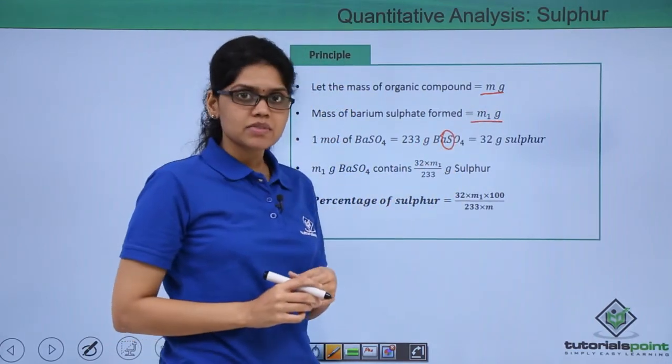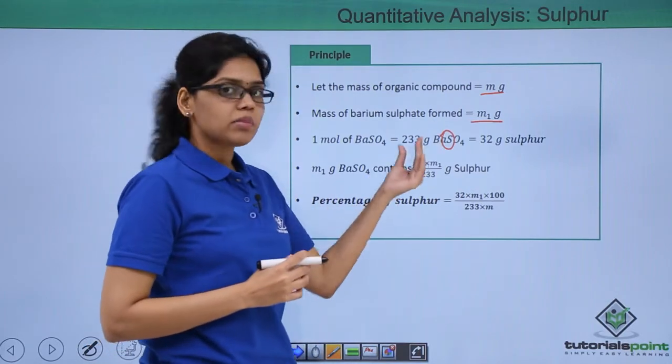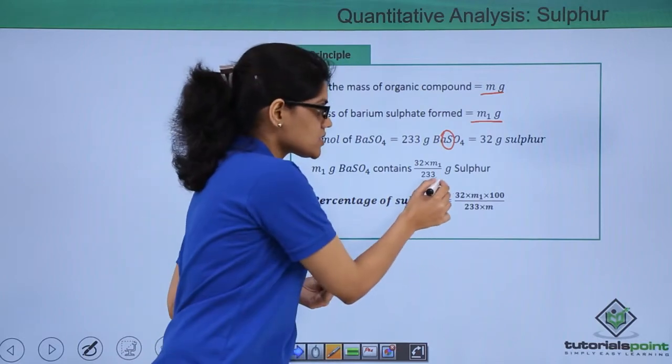Then m1 g of barium sulphate which has been precipitated out contains how much of sulphur. That can be obtained by cross multiplying and you get this as a value.